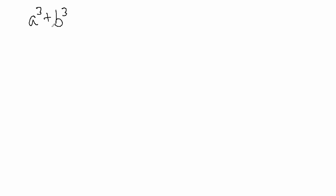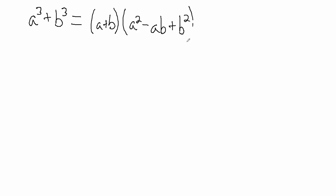In this section we're going to start talking about special types of expressions, and those are nice because they have handy little formulas that we can use to factor them. What we're going to look at first is something called sums of cubes — that's exactly what it sounds like. It's just one thing cubed plus another thing cubed: a cubed and b cubed, adding them together. The nice formula for this is the quantity (a + b) times the quantity (a² − ab + b²). That's the formula for factoring the sum of two cubes.